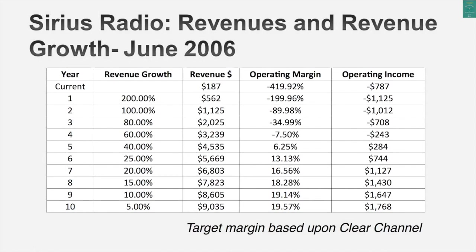In 2006, Sirius had revenues of $187 million and was losing more than five times those revenues — its operating margin was minus 420%. That's horrible. My task is to make Sirius a viable company. Here are the inputs I use to bring Sirius into the future. First, I assume those small revenues become big revenues, so I assumed a revenue growth rate.